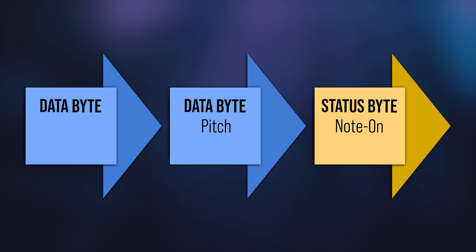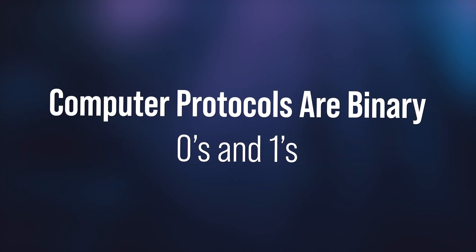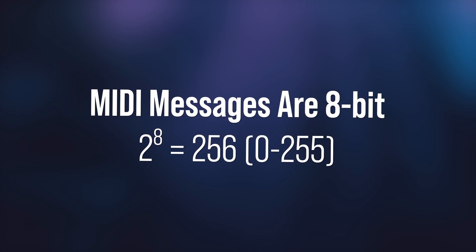The data bytes relay specific information related to the status byte. So for a note-on message, the status byte defines that this is a note-on message, the first data byte tells you the pitch of that note, and the second data byte relays the velocity of the note, which often determines the volume or dynamic. Computer protocols are binary, so you're working with zeros and ones — two options. MIDI messages use an eight-bit system, so if you take two to the power of eight, this gives you 256 possible combinations. You could also think about this as zero to 255.